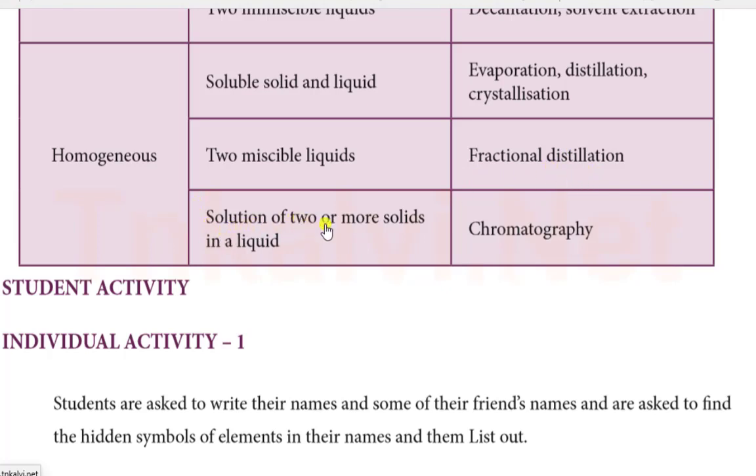The third type is the solution of two or more solids. We can separate it by chromatography. There are many types of paper chromatography, column chromatography. We can apply the chromatography technique based on the mixture.